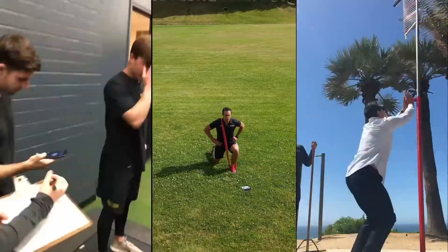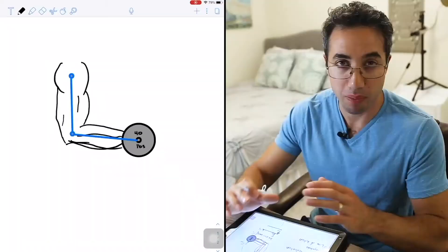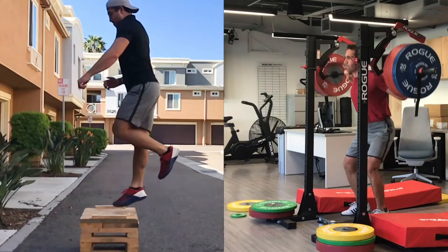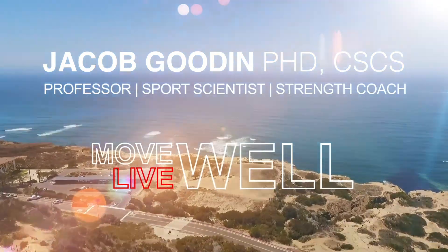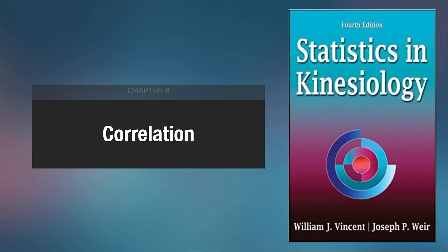Hey guys, Professor Gooden here to talk to you about how we examine the relationships between two different variables using correlations. I'm Dr. Jacob Gooden, professor of kinesiology at Point Loma Nazarene University, and in this video we'll examine correlations and how to interpret them. This information comes from the textbook Statistics and Kinesiology, which is linked down in the description below, and it was written by Drs. Vincent and Ware.